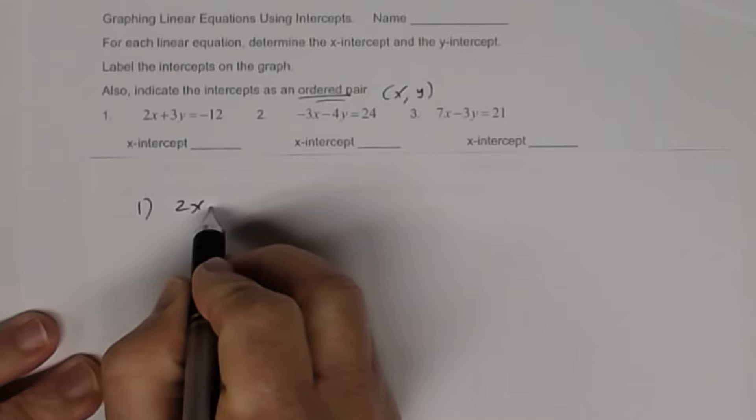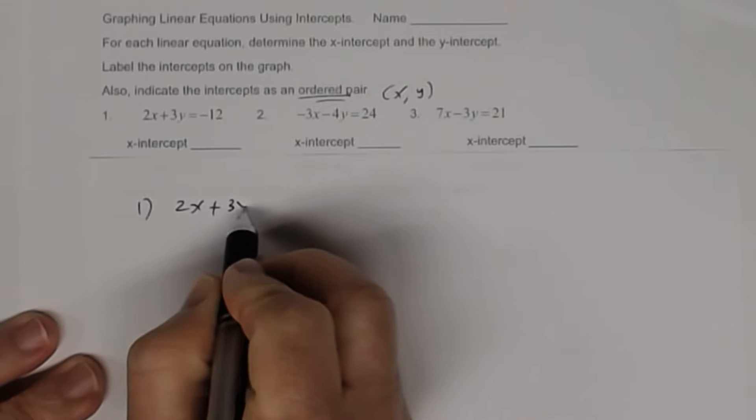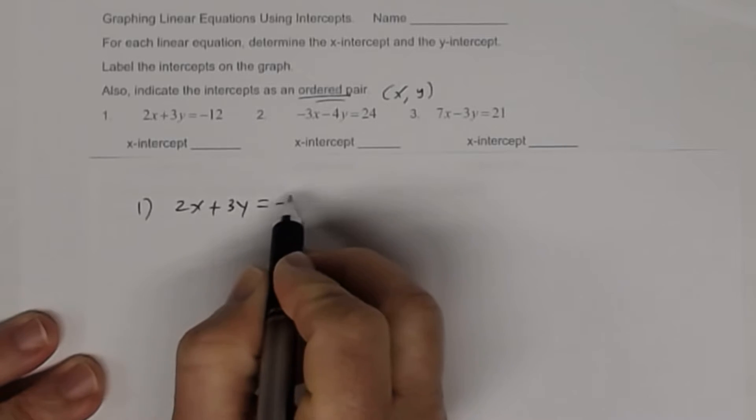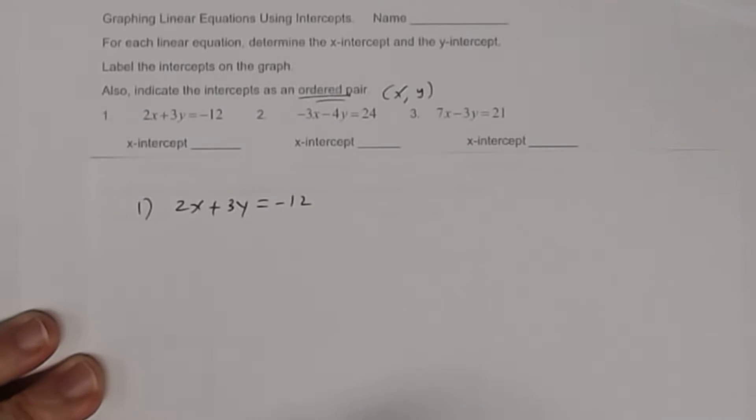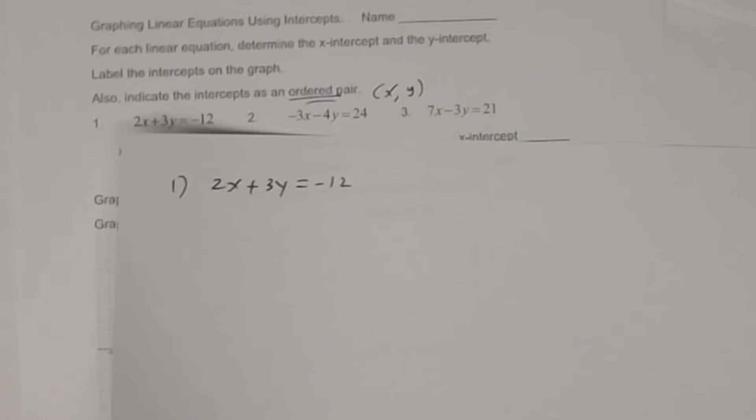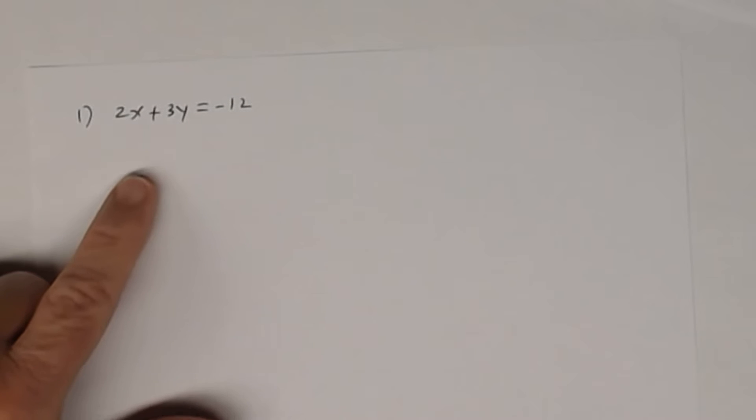We have 2x plus 3y equal negative 12. That's my first linear equation, and I want to graph this by finding the x and y-intercept.